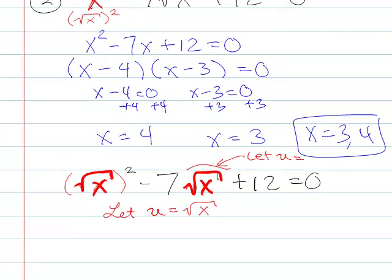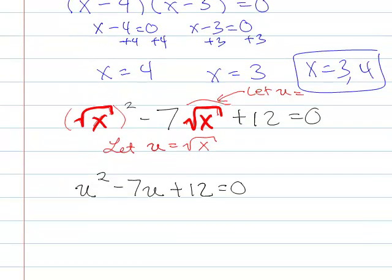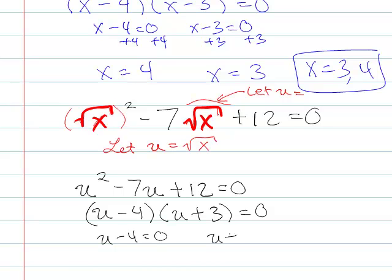Okay? So if we do that, so instead of the square root of x, I'm gonna write u. So I now have u squared minus 7u plus 12 equals 0, which I can solve. u minus 4, u plus 3. u minus 4 is 0, u minus 3 is 0. So u equals 4 or u equals 3.